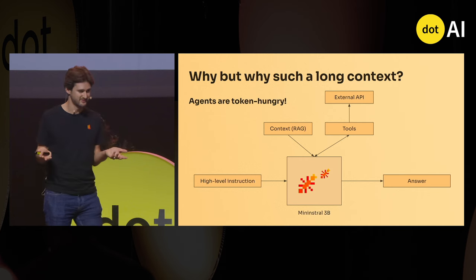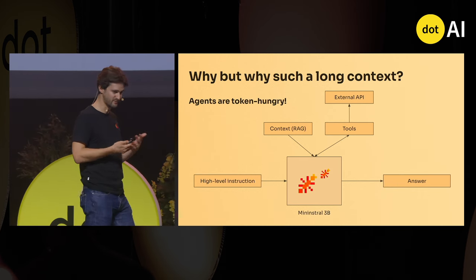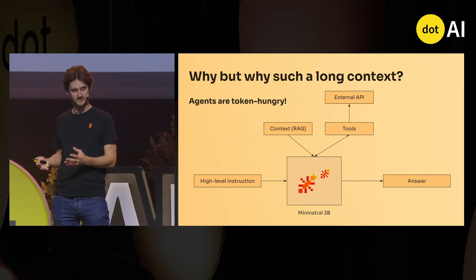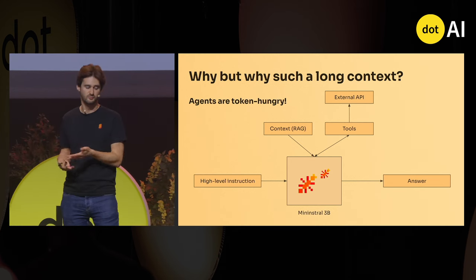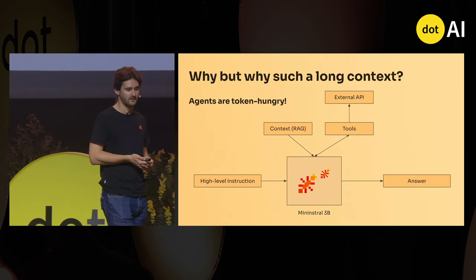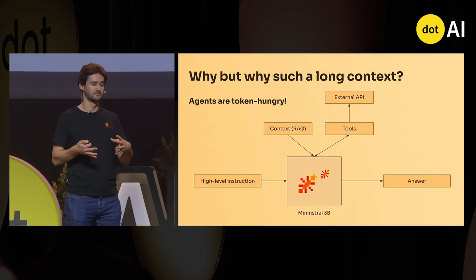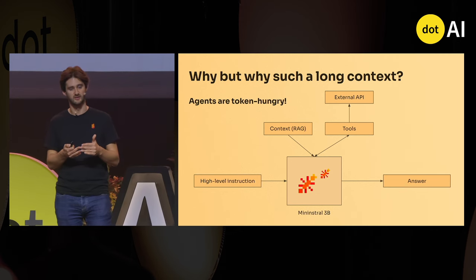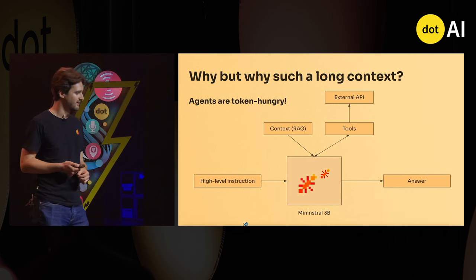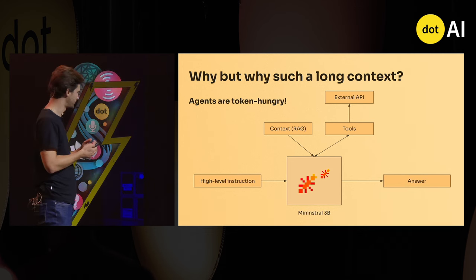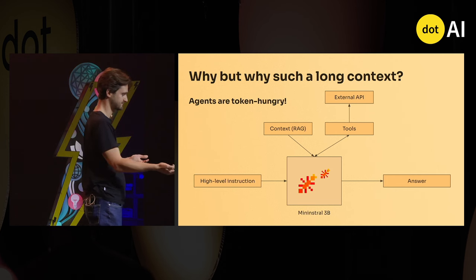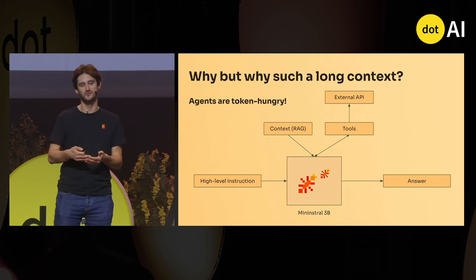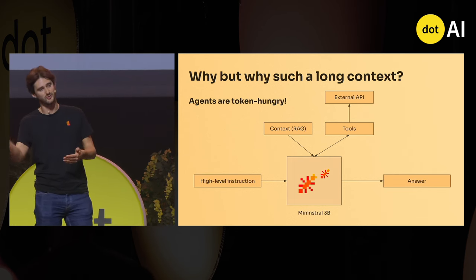What is an agent? I don't have a golden definition, but I have a vision. Take Ministral 3B — you input high-level instructions, like 'book me an appointment for tomorrow with my doctor.' The model is not alone: it can retrieve context via RAG, which uses a lot of tokens, and it has tools — a way to connect to external APIs and act on them. For instance, retrieve the doctor's calendar status, integrate the results, and call a tool to book the appointment.